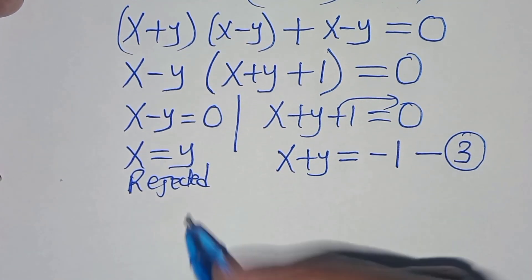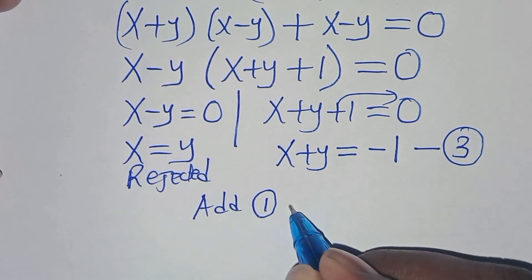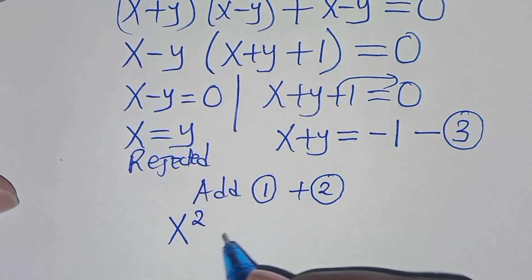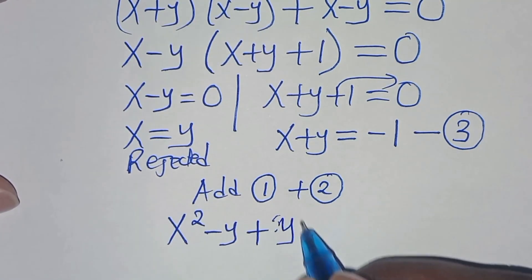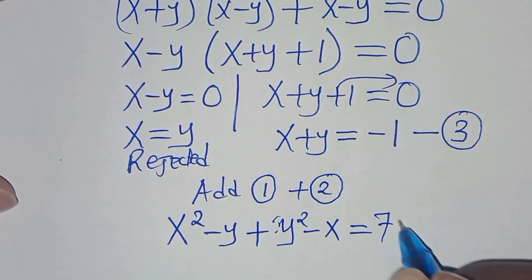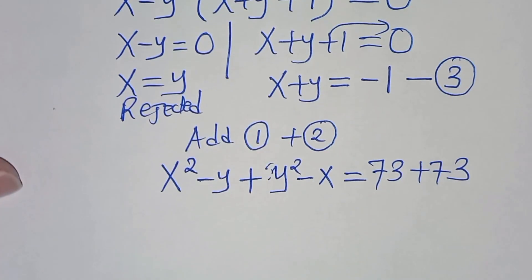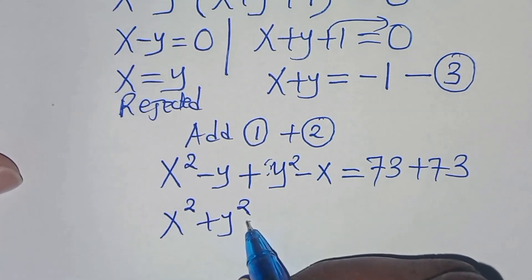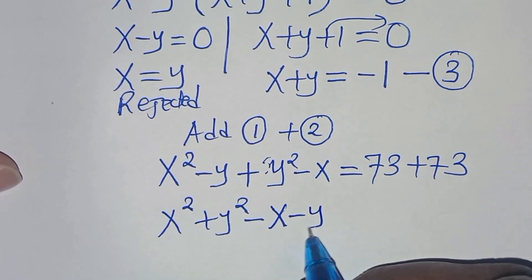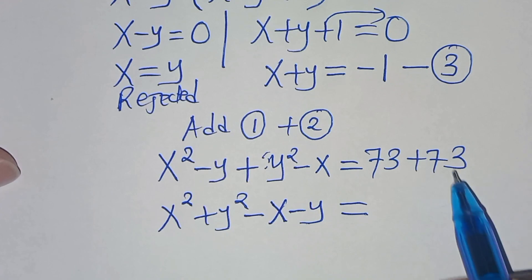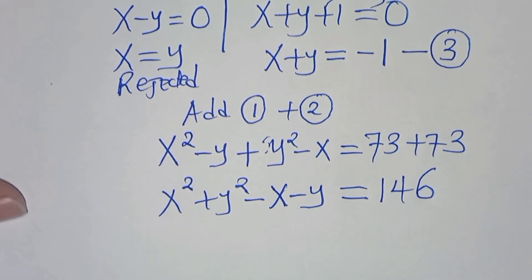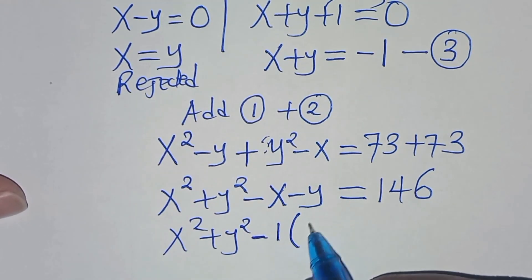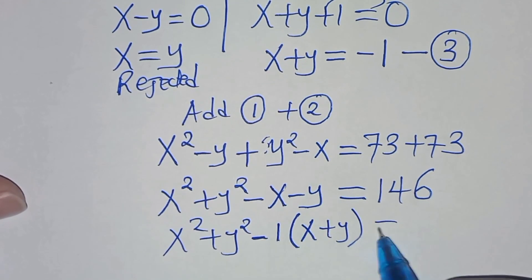The next step is to add equation 1 with equation 2. So equation 1, we have x squared minus y, plus equation 2, y squared minus x, this is equal to 73 plus 73. And this implies that x squared plus y squared, then minus x minus y, this is equal to 73 plus 73, and this is equal to 146. So we have x squared plus y squared, and we can factor out 1 so that into the parentheses we have x plus y, this is equal to 146.